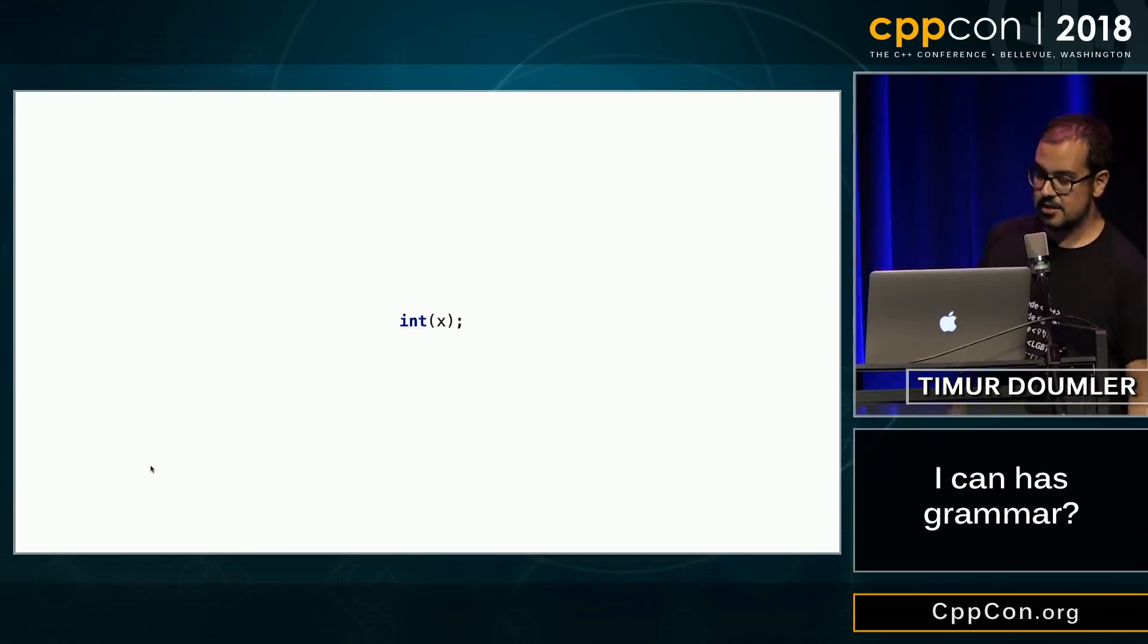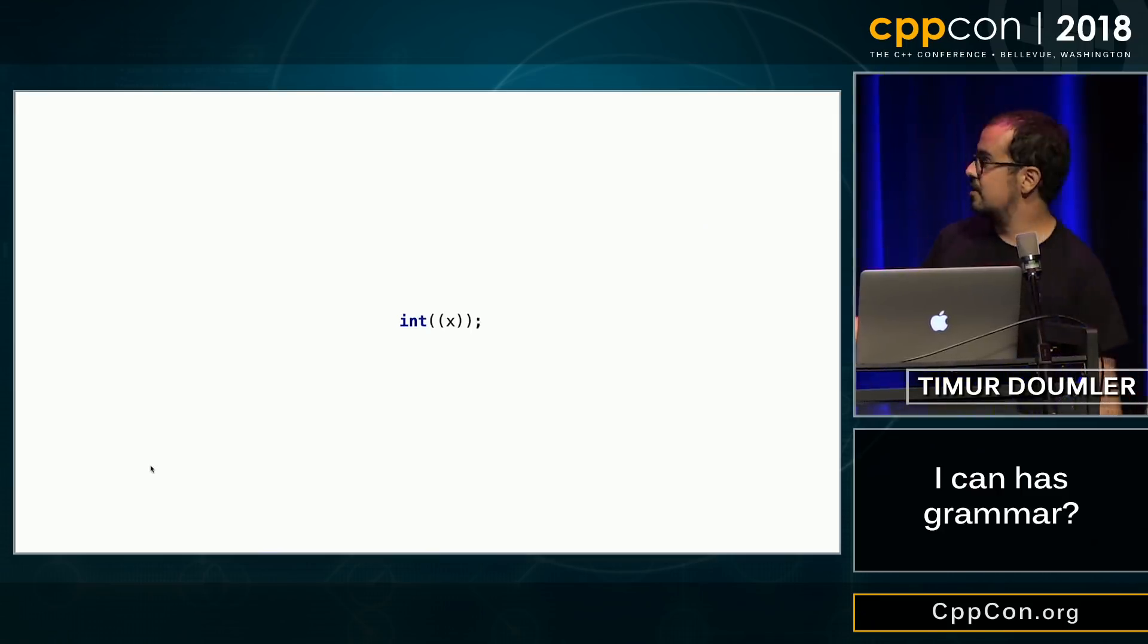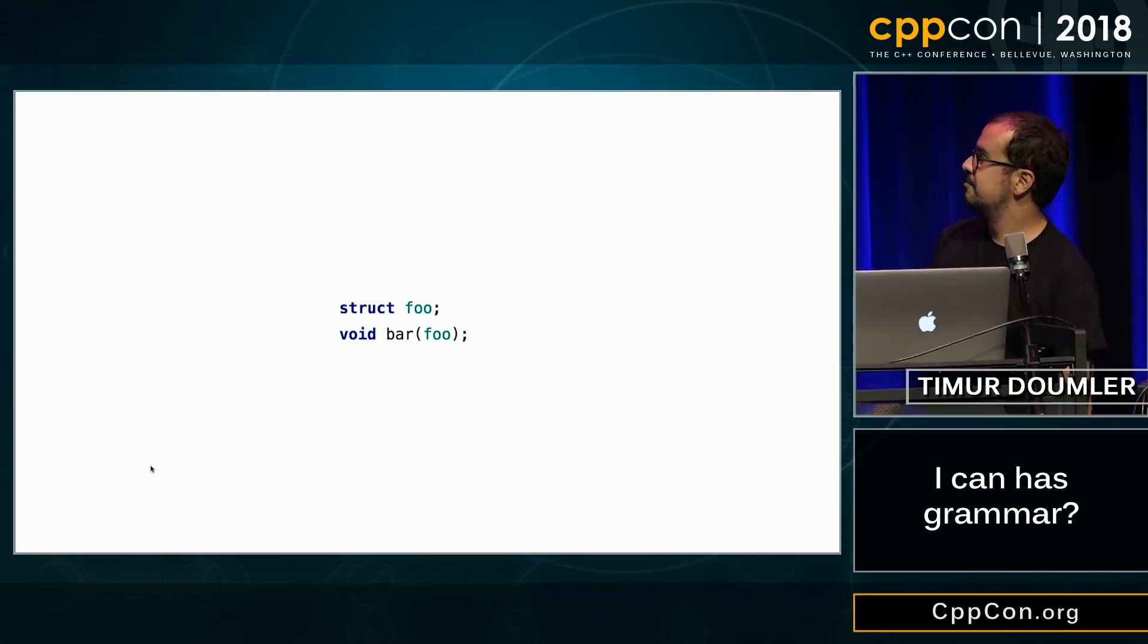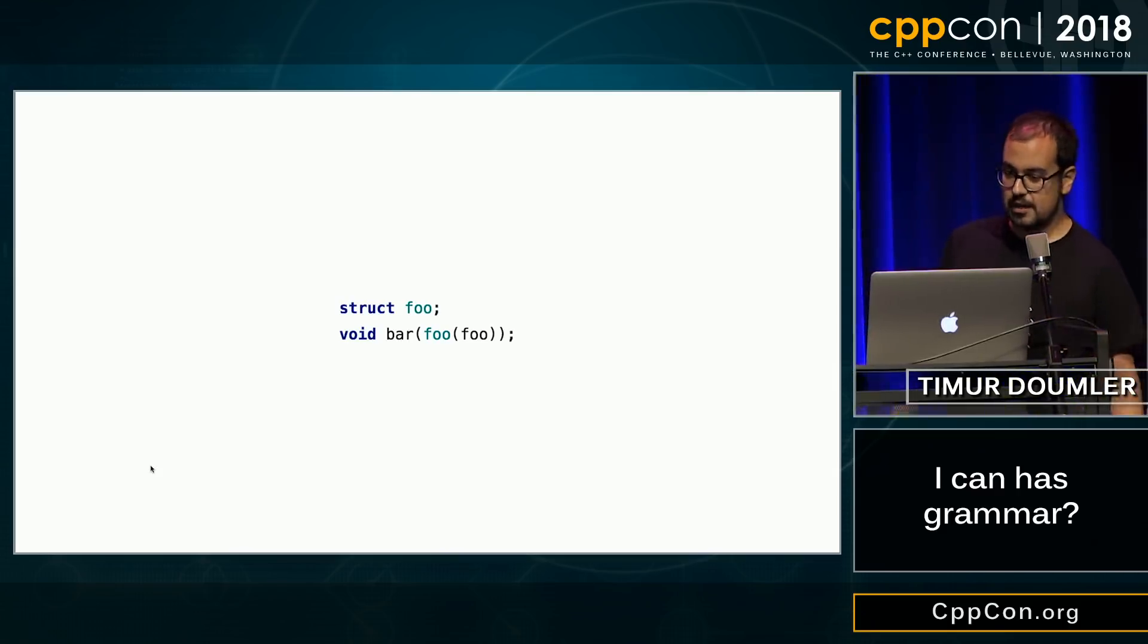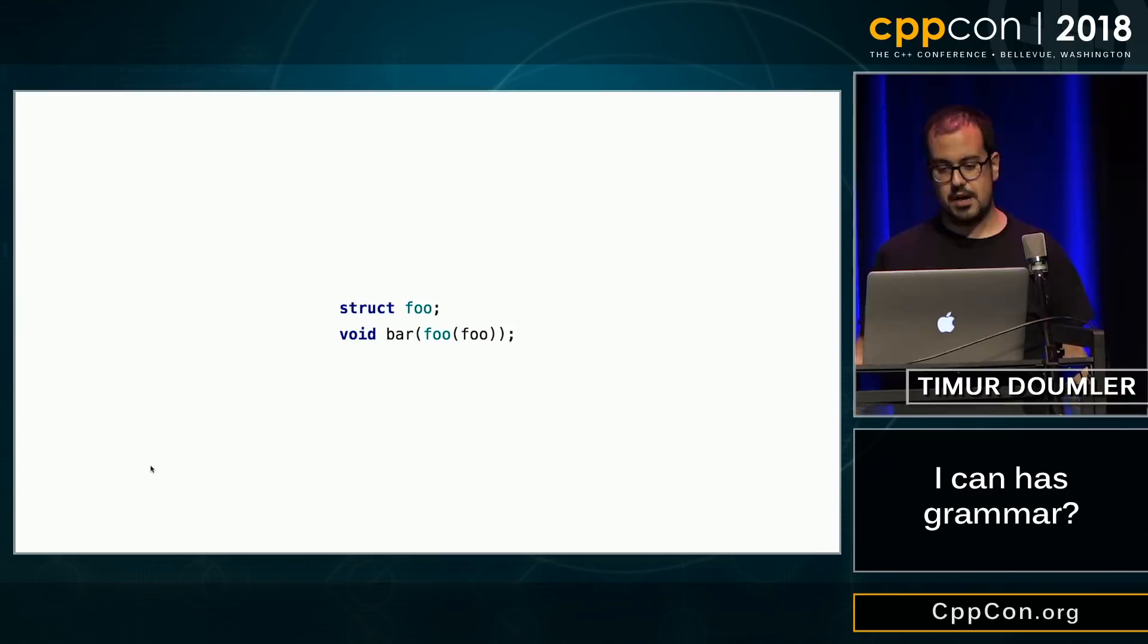You can also put parentheses around declarators, like variable names, right? Which is great, because, for example, you have a function that takes a foo, which is a struct. Let's give this parameter a name. Let's also call it foo, just because we can. Let's put parentheses around the declarator. Now, we all know this is the vexing parse. Now it's a different thing, right?